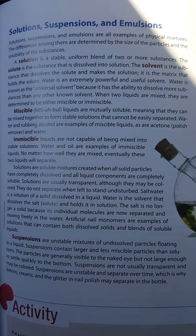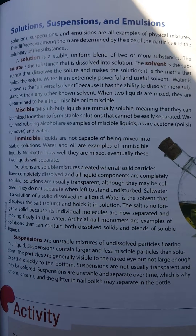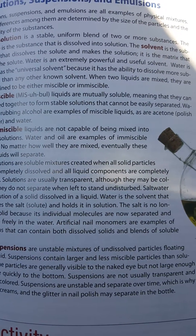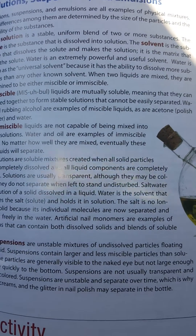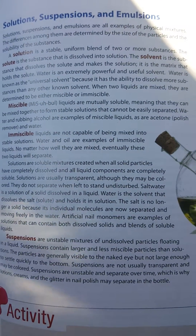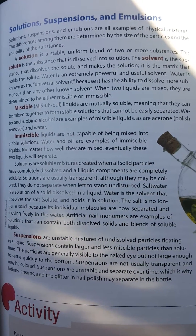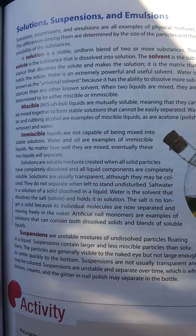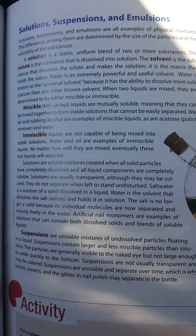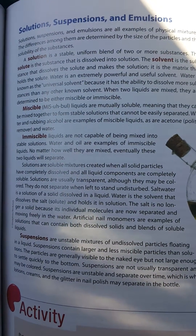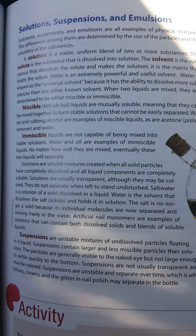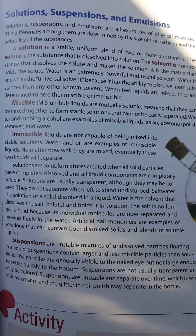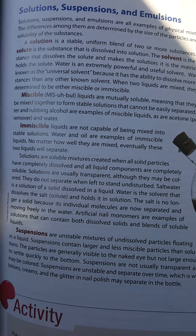When two liquids are mixed, they are determined to be either miscible or immiscible. Miscible liquids are mutually soluble, meaning they can be mixed together to form stable solutions that cannot be easily separated. Water and rubbing alcohol are examples of miscible liquids, as are acetone, polish remover, and water. Immiscible liquids are not capable of being mixed into stable solutions. Water and oil are examples of immiscible liquids — no matter how they are mixed, eventually these two liquids will separate.